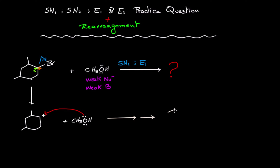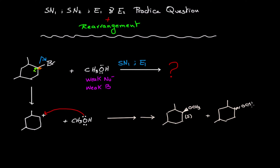The first substitution compound has OCH3 facing forward, and if you determine the configuration you'll find it's S. The second substitution product is the enantiomer: OCH3 facing backward, which is R. So these are the two substitution products from the original carbocation.